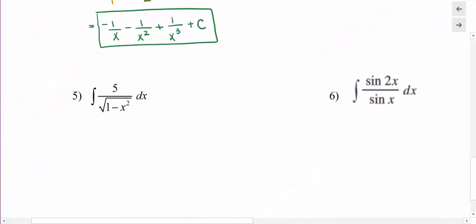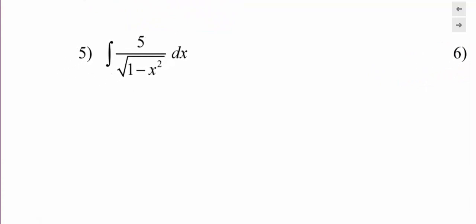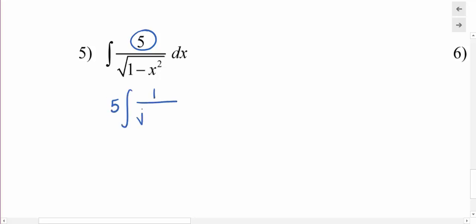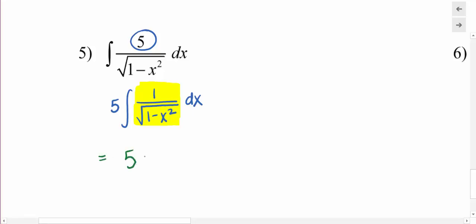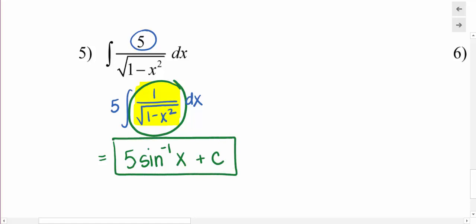Let's get into one we might not recognize. I'm going to move the constant coefficient out in front of the integral symbol, because we might have a better chance of recognizing that integral. That integral came from inverse sine of x — the derivative of inverse sine of x gives that expression. You were asked to memorize inverse sine, inverse cosine, and inverse tangent.